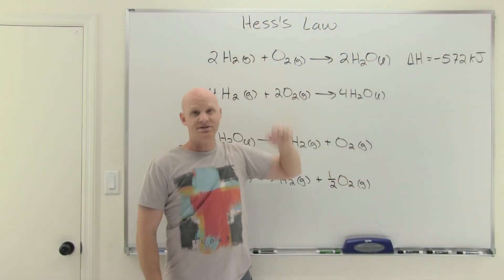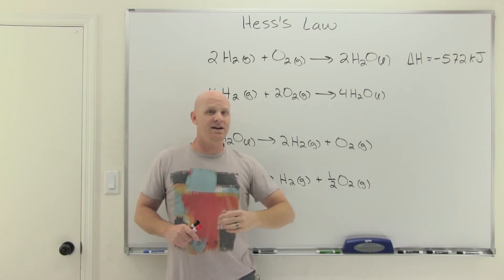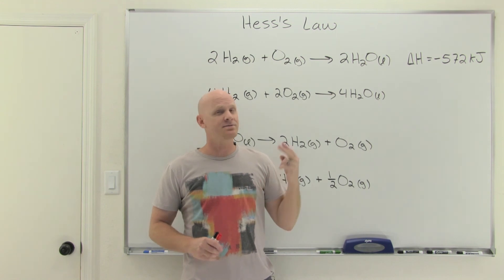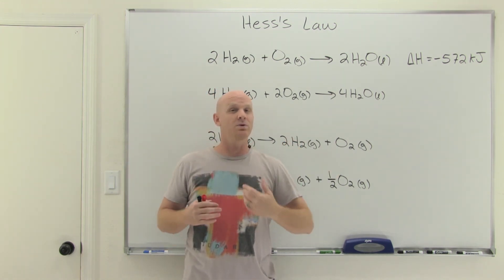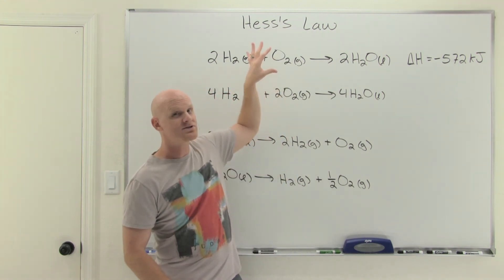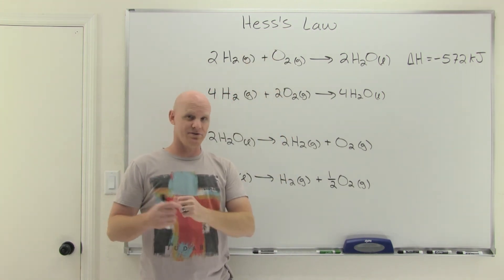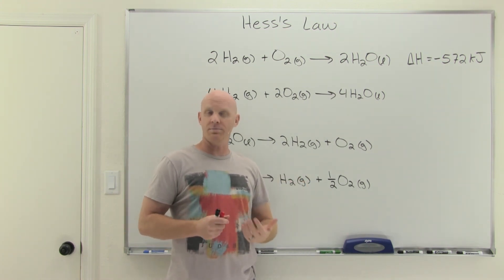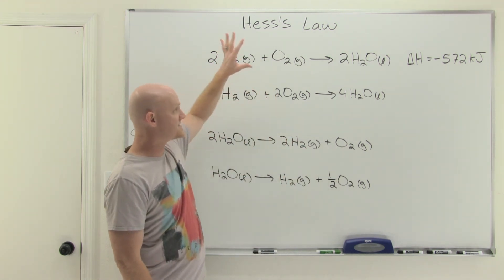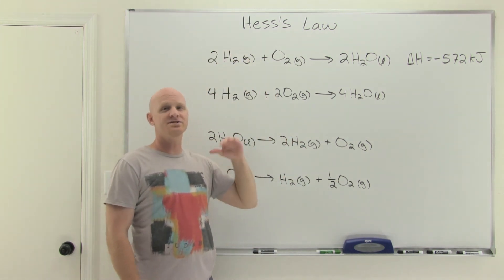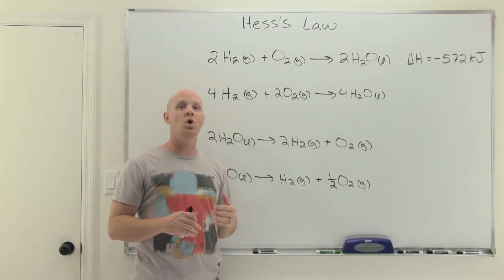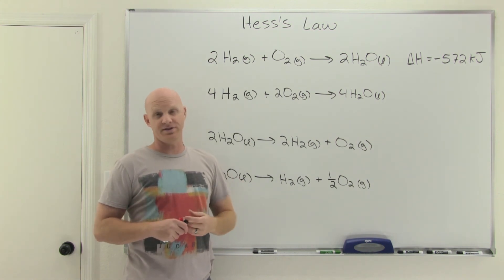Hess's Law is the first of two ways we're going to learn how to calculate delta H in this chapter — there's a third way we might cover a few chapters down the road. Students often confuse the two because they're both used to accomplish the same task: calculating delta H for a reaction. Hess's Law is the harder of the two. The next one — formation reactions — will seem far easier and more of a plug-and-chug calculation. With Hess's Law, you're given a series of reactions and you have to combine them in various ways to add up to some overall reaction and figure out the delta H for that reaction.